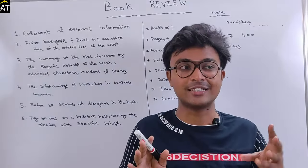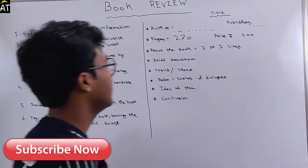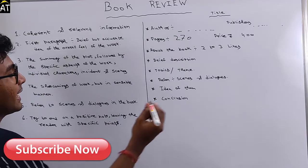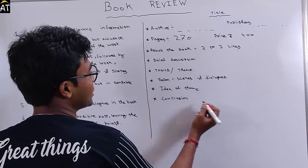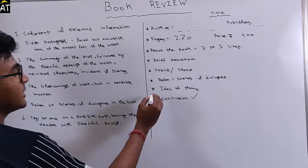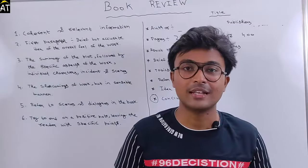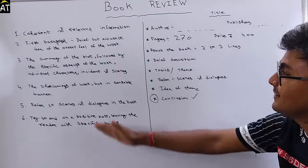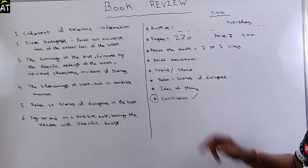After the description, refer to the scenes, acts, or dialogues. For example, if a novel has a good dialogue, you can incorporate that dialogue in your book review. Then give your idea of the theme — what your idea is about the theme. And lastly, write the conclusion. In short, I will explain these five to six points and give an overview of the title format.